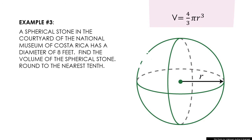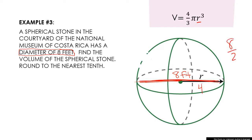We have one last example — a word problem. A spherical stone in the courtyard of the National Museum of Costa Rica has a diameter of 8 feet. Find the volume of the spherical stone, round to the nearest tenth. As I read through this word problem, I need a label: diameter of 8 feet. So in my picture, the red line is 8 feet in length. Rethinking my formula — volume equals four-thirds pi r cubed — I need the radius. Your radius is half of your diameter. What is half of 8? Half of 8 is 4, so your radius is going to be 4.